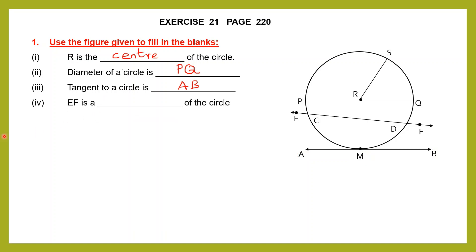Question 4: EF. We have E here and the line going on to F. Now what is EF? It is a straight line that intersects the circle — touching it at two points on the circumference. Such a line which intersects the circle at two points is called a secant. If it touches the circle only at one point it's a tangent, but EF passes through the circle touching it at two points, so it is the secant of the circle.